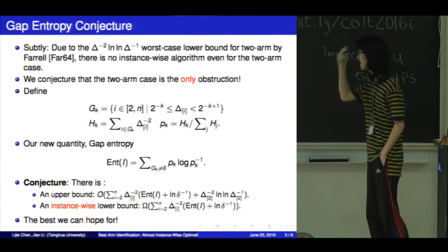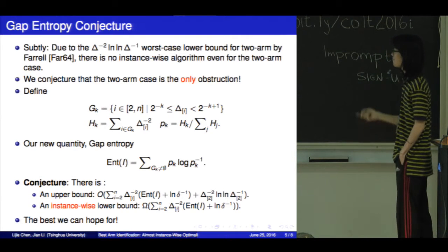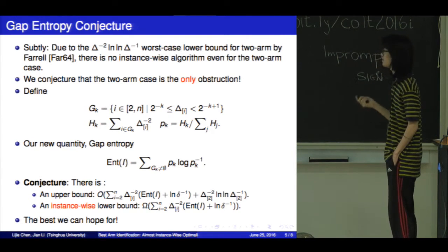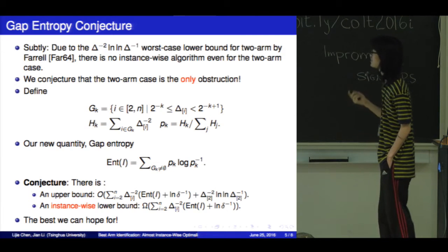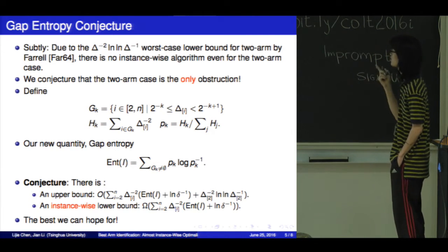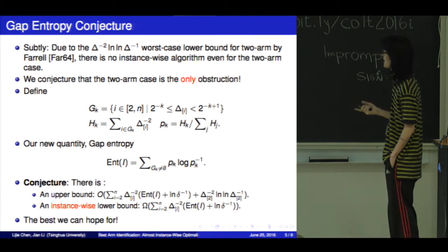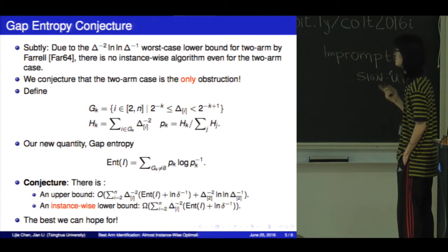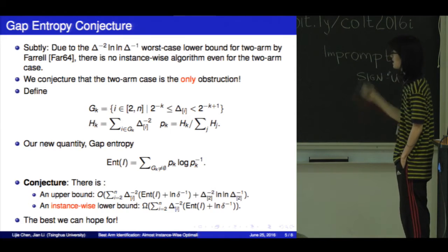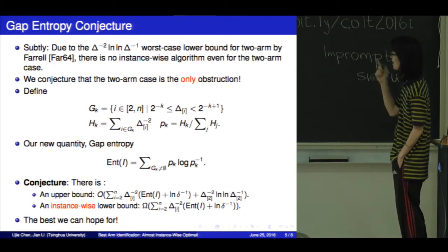So, let us describe our conjecture. There's a problem here: due to the 1 over delta squared times log log 1 over delta worst-case lower bound for the two-arm case by Pharrell, there is no instance-wise optimal algorithm even for the two-arm case. But we conjecture that the two-arm case is the only obstruction.